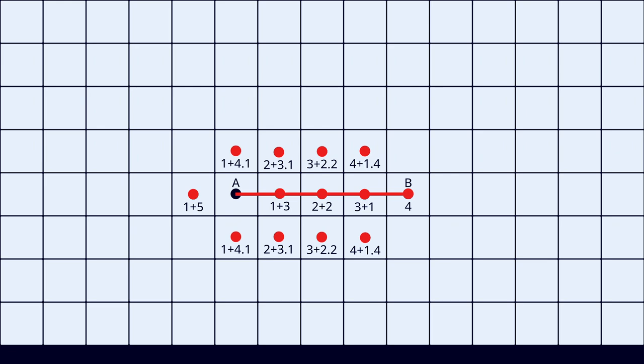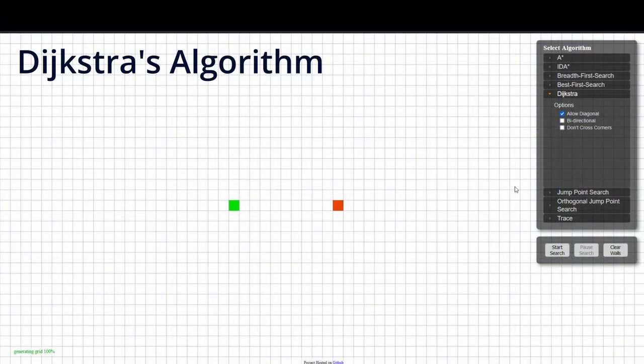But this time, their distance to B is taken to account as well, so the routes leading away from B stop pretty quickly. When we compare this to Dijkstra, we can immediately tell the difference. The shortest path was found by exploring much less tiles.